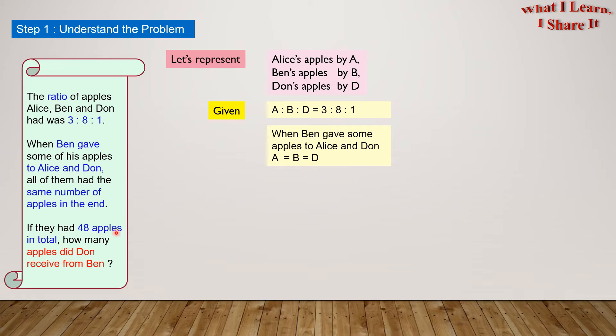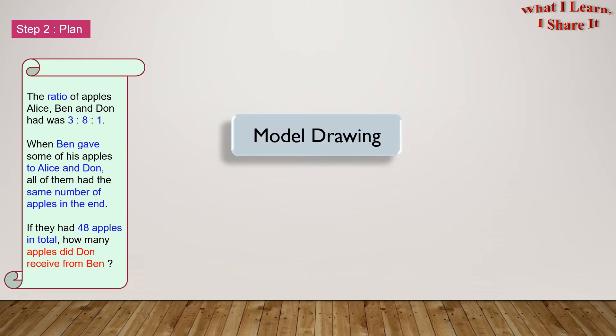If they had 48 apples in total, how many apples did Don receive from Ben? This means we are also given a total of 48 apples, which we can write as A plus B plus D equals to 48. And we have to find the number of apples Don got from Ben. Since this is a question related to ratios, I'm thinking of using model drawing for this.